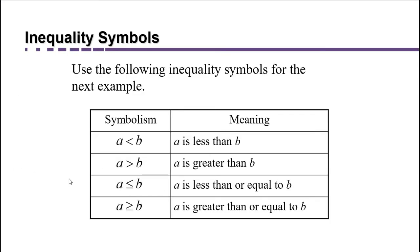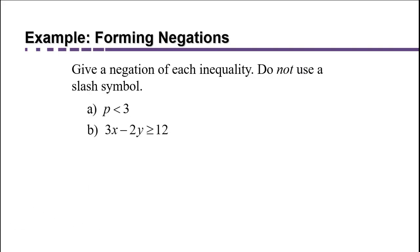Another special case of negations is when a statement involves an inequality. A quick reminder of the notation: arrows pointing left mean 'less than,' pointing right mean 'greater than,' and a small line underneath means 'or equal to.' Let's consider how to negate a statement like 'p is less than 3.'